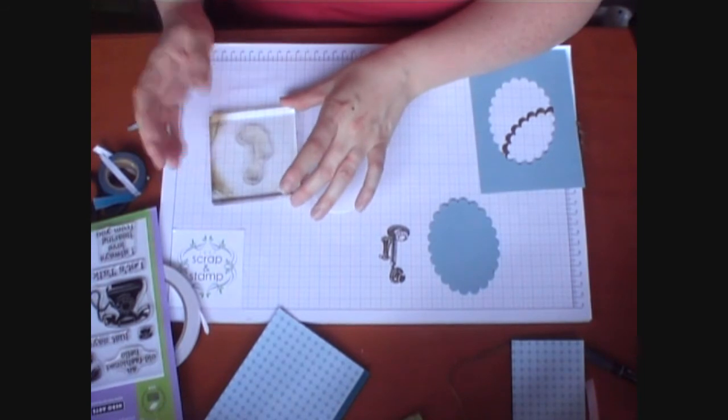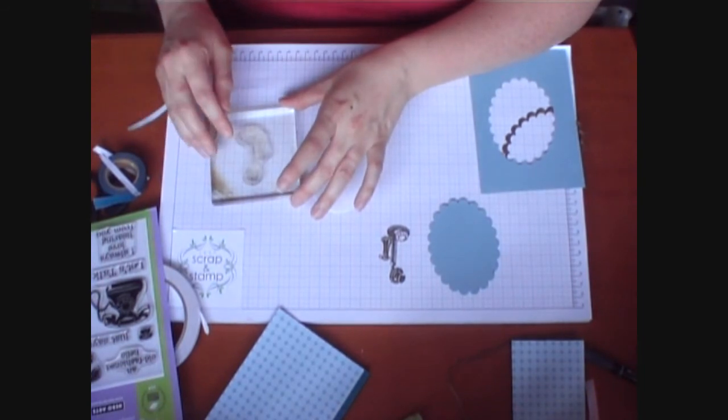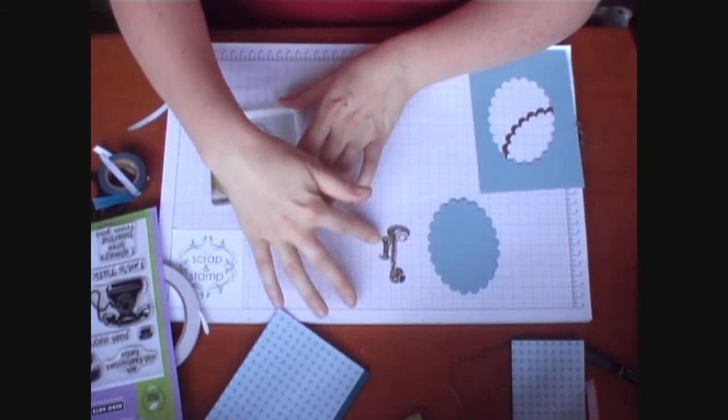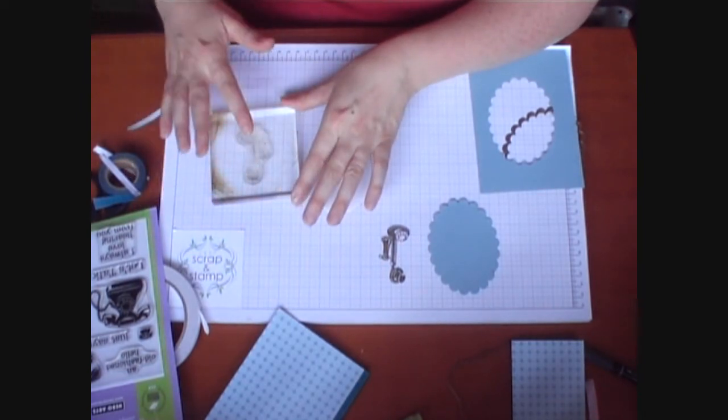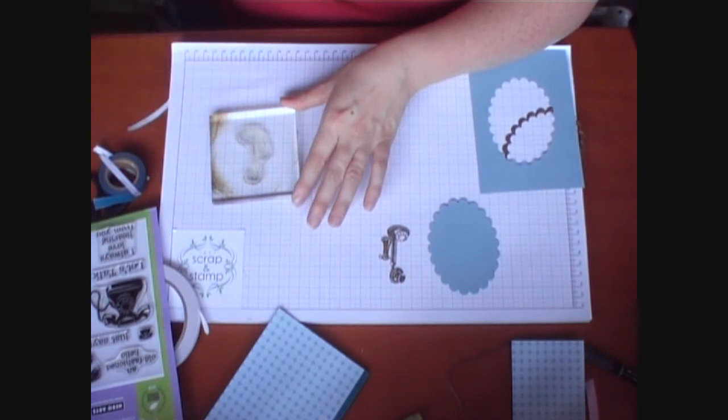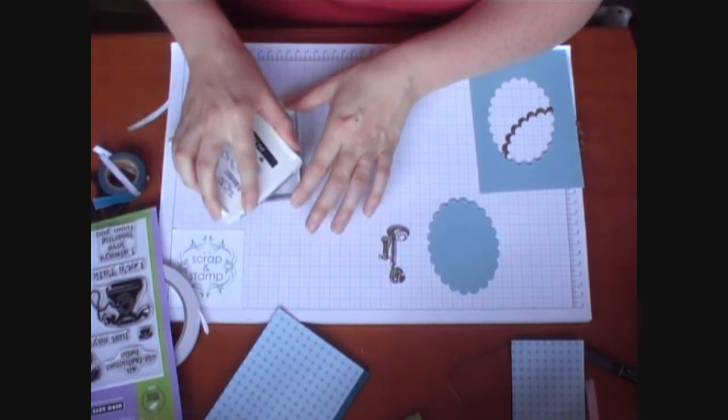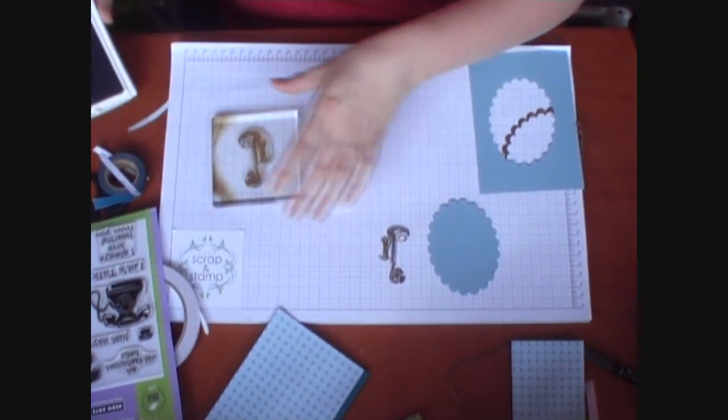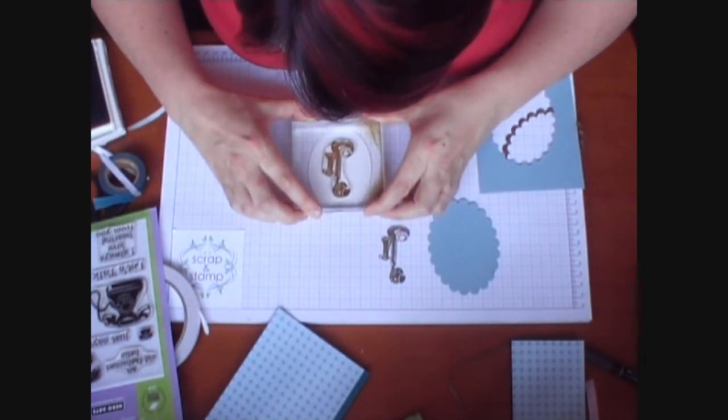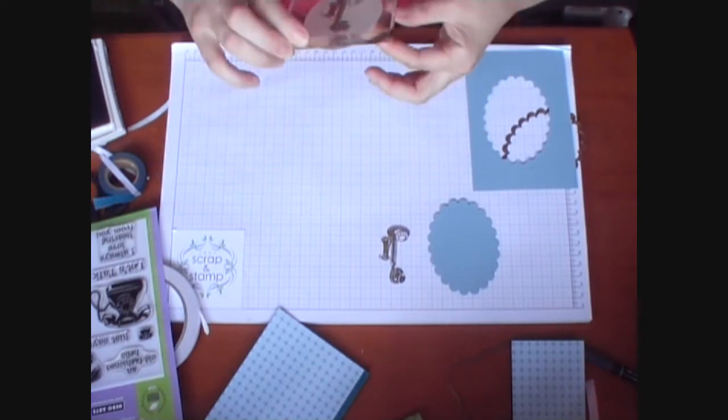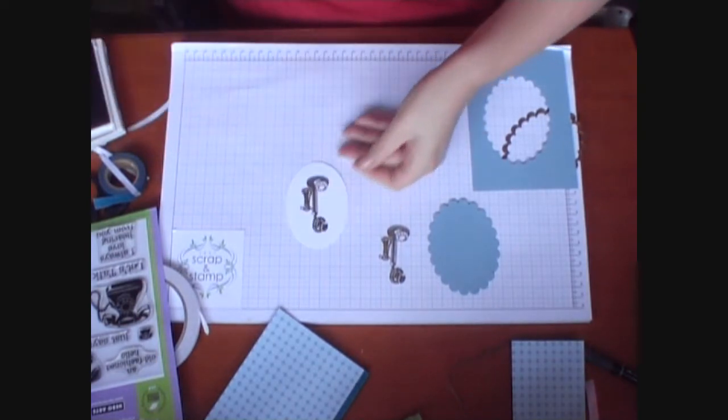Sometimes with polymer stamps the inks will bead on the top of the stamp and you'll get a blotchy finish. To get around that, if you just use a sanding block to gently sand the top of the surface it'll stop the ink from beading on there. But usually Hero Arts stamps are quite good in that regard. So we'll just stamp that in the middle of our oval.